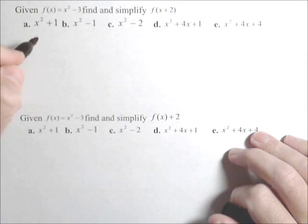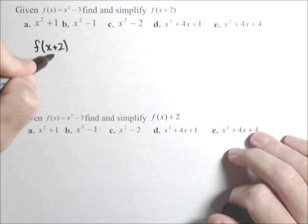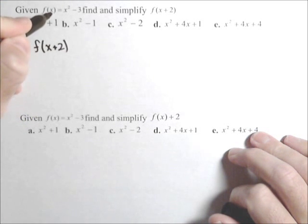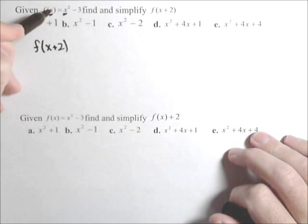It's very important. So f of x plus two, that means our input is now x plus two. Now in the function, our input placeholder is x. That means if we're replacing x with x plus two here, we need to replace x with x plus two here.